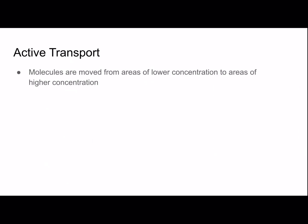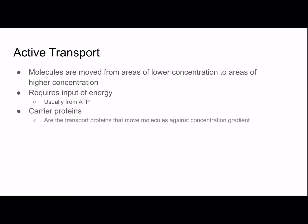Active transport is the opposite of passive transport — molecules are moved from areas of lower concentration to areas of higher concentration, requiring energy input, which usually comes from ATP. Carrier proteins are the transport proteins that move molecules against the concentration gradient; they're the only proteins used for active transport. These are often called pumps because they pump things against the concentration gradient.